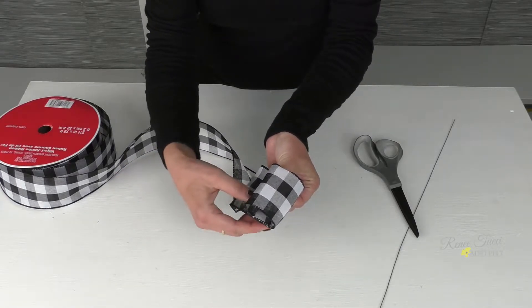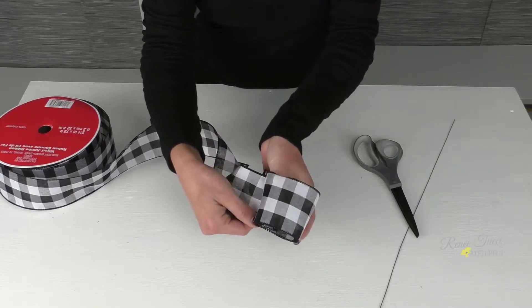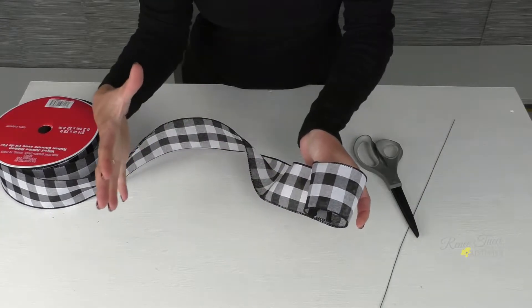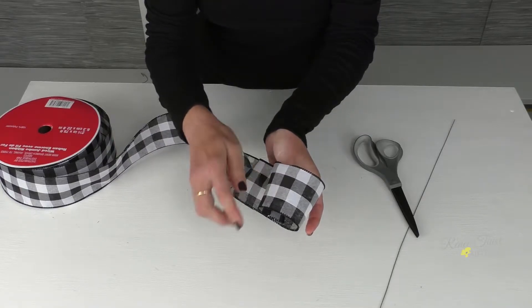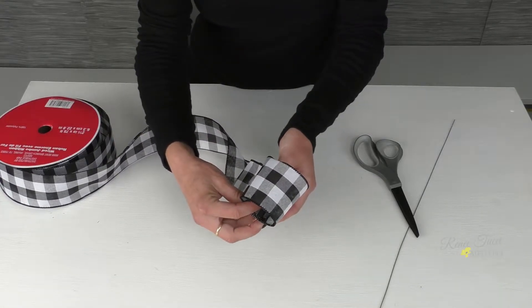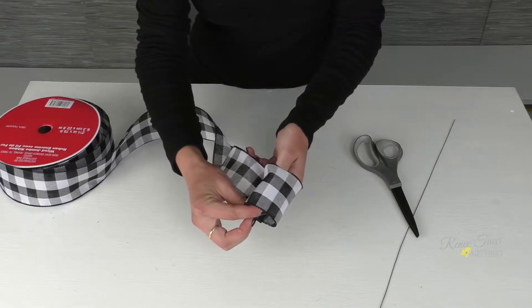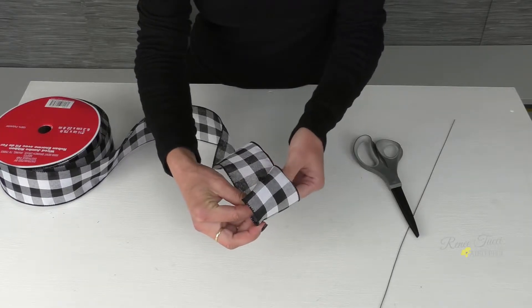You can adjust that as needed if you would like it to be bigger. If you want your finished bow to end up being a large bow, you will need a larger center loop. But our bow today is just going to be three loops on each side, so we can start with a smaller center loop.